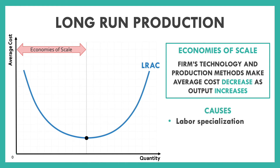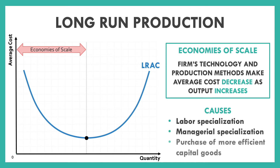This happens for a couple of reasons. We talked about the idea of labor specialization — the bigger you grow, you're able to specialize your labor more and be more efficient with it. The same thing applies managerially. You're also able to purchase more efficient capital goods and machinery, which is more effective, and so you're able to bring that average cost down.